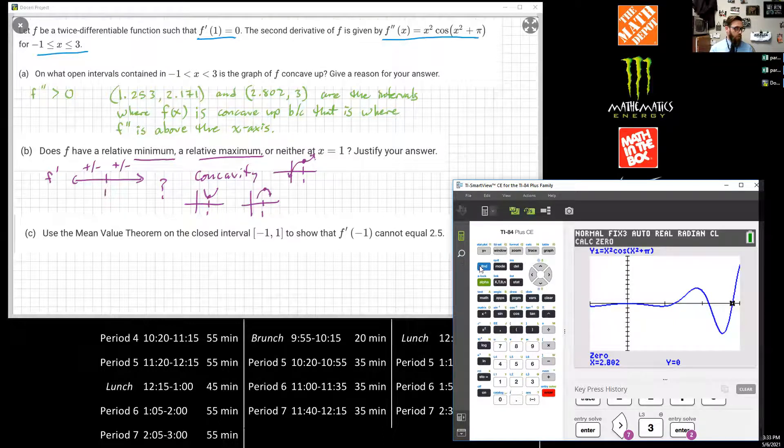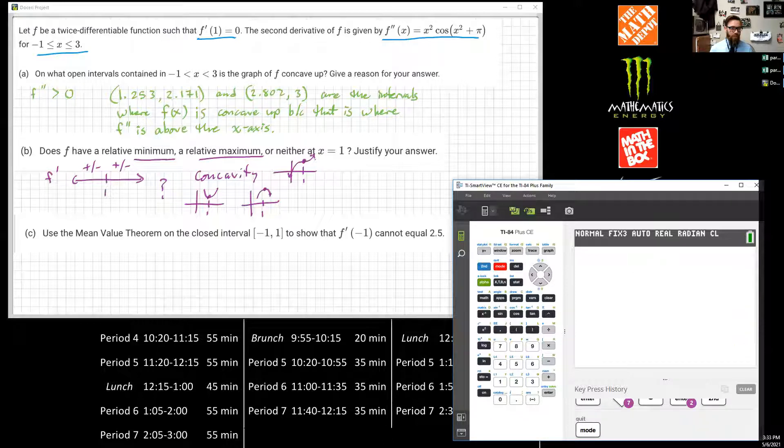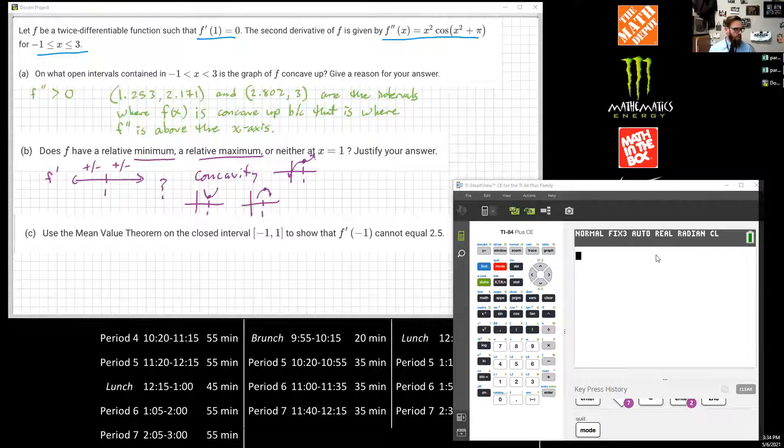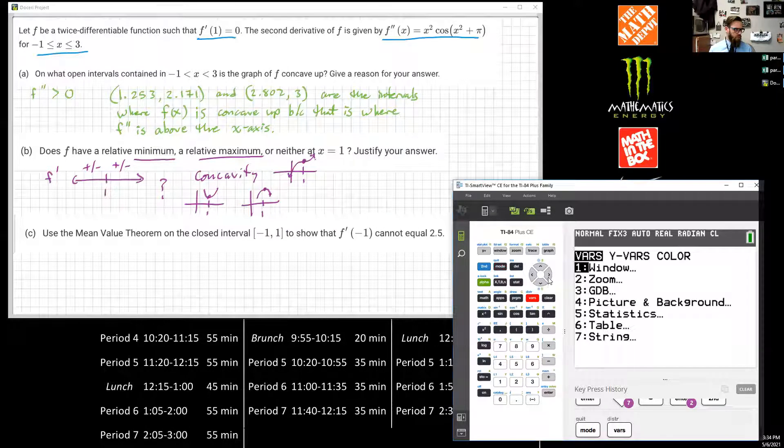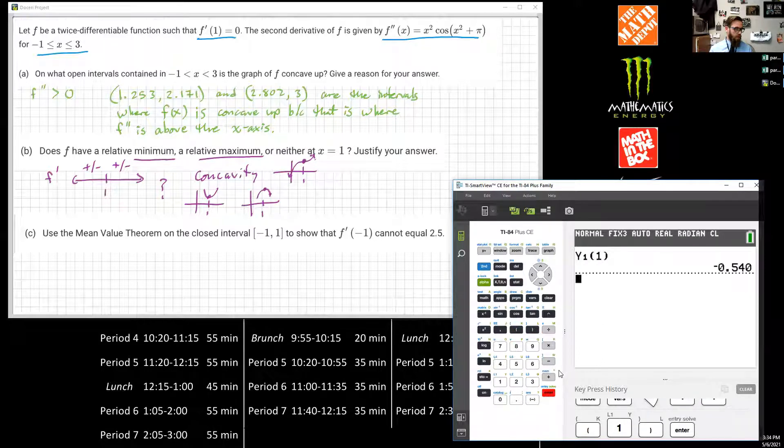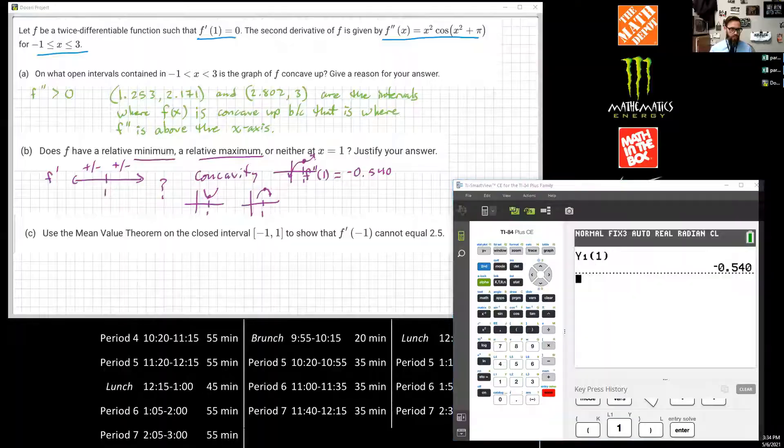Or is it zero? So what we can do is we can hit quit, go to the main window right here. And I can plug in a number. Let's use Y sub one. So I'm going to go to Y vars because that's where my function is. It's in Y vars. And then select Y sub one. And then I'm going to plug in one to see what I get. Boom. And I get -0.540. So we know it's not equal to zero. And we know that it's negative, that F'' is negative. So I can write that out.